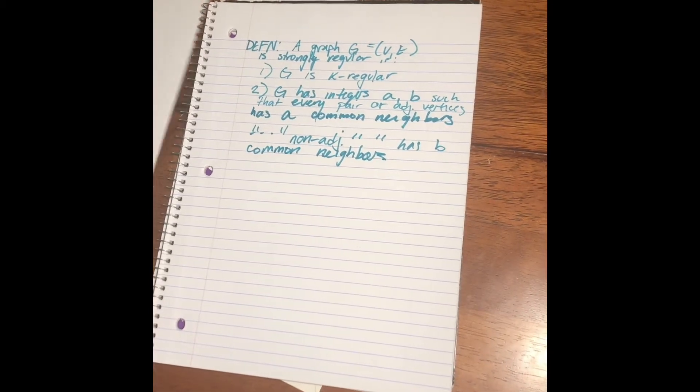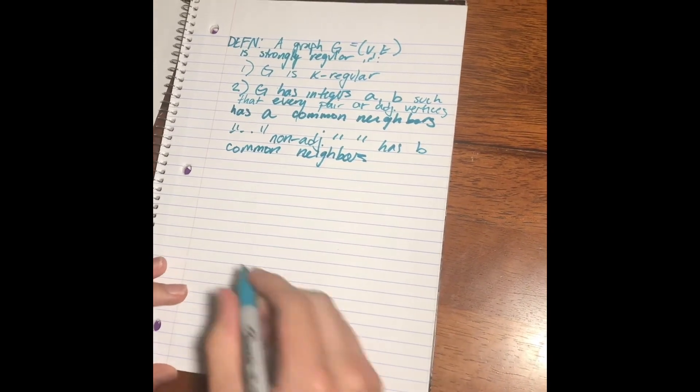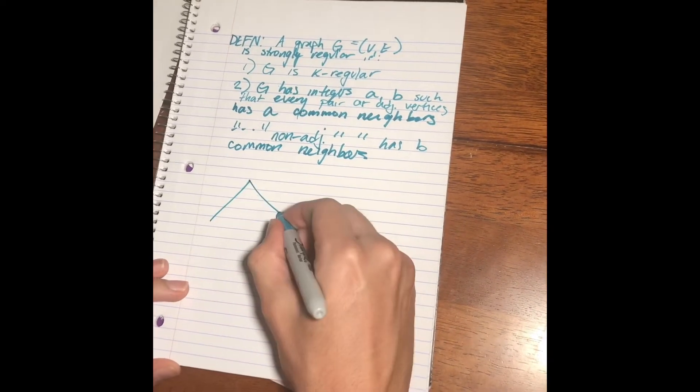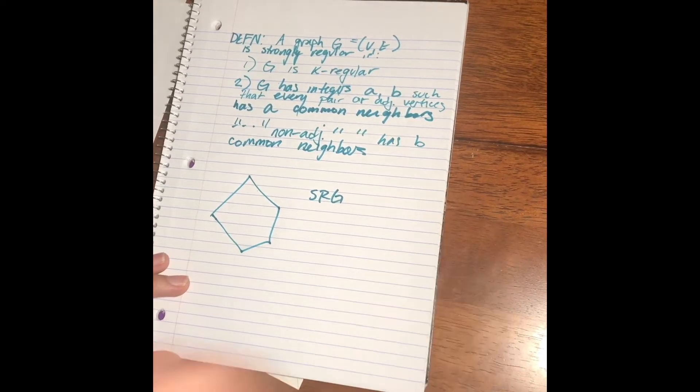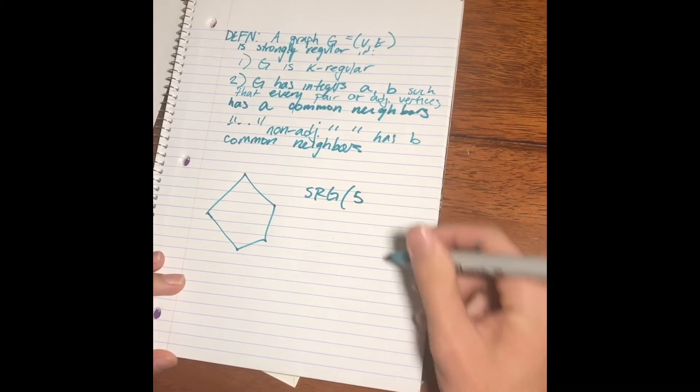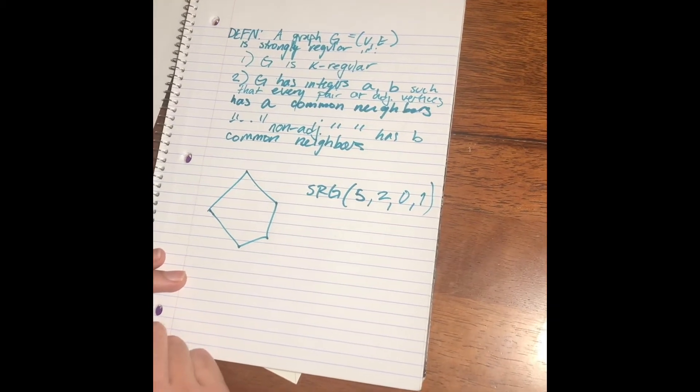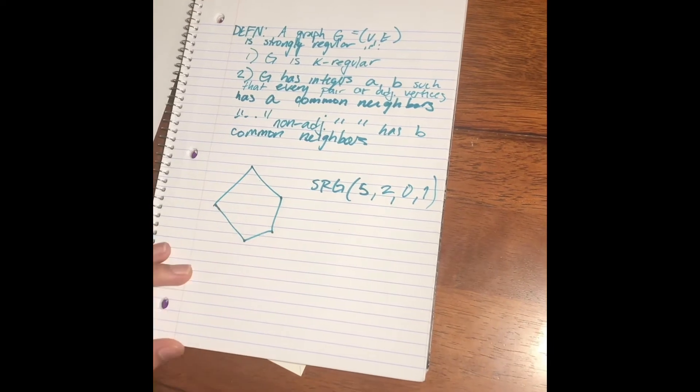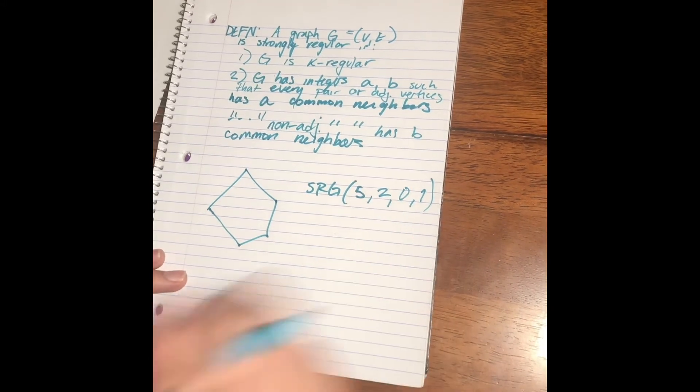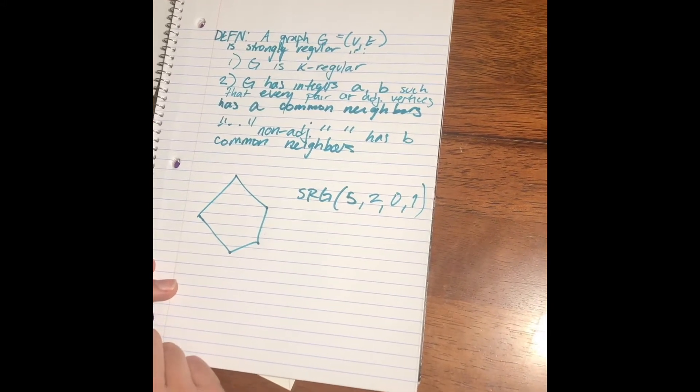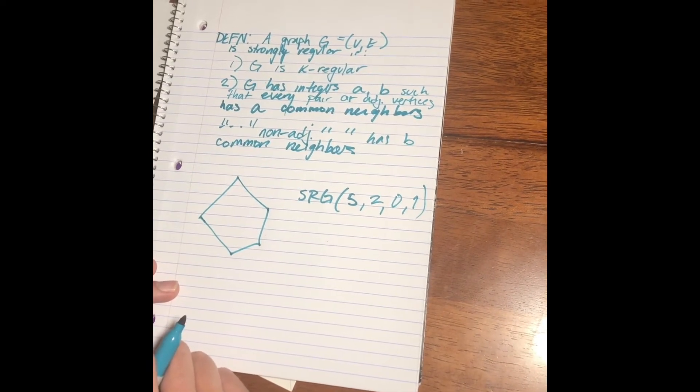So, a really easy example of a strongly regular graph would be the 5-cycle. Right? We would denote that strongly regular graph on 5 vertices as so. So, every adjacent pair of vertices has 0 common neighbors and every non-adjacent pair of vertices has 1.